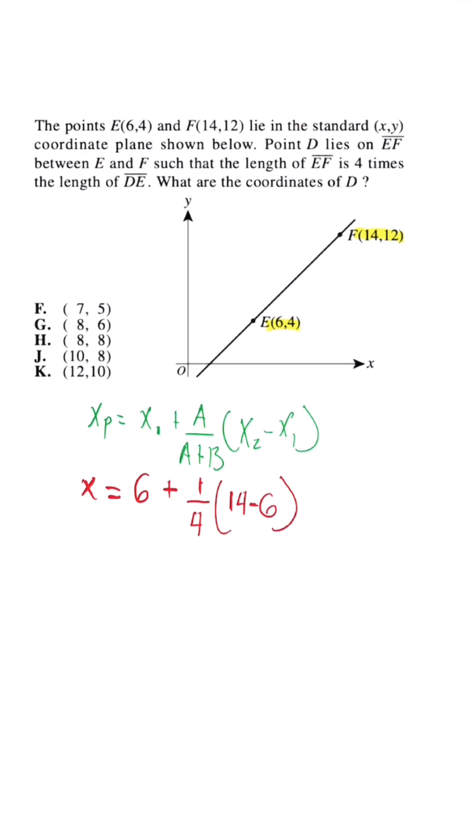Now when we simplify, we have X is equal to 6 plus 1 over 4 times 8. When we simplify a fraction, this is going to be equal to 6 plus 2, so we know X is equal to 8. So just based off this answer, we could eliminate three of our answer choices. Now we need to determine what is the Y.